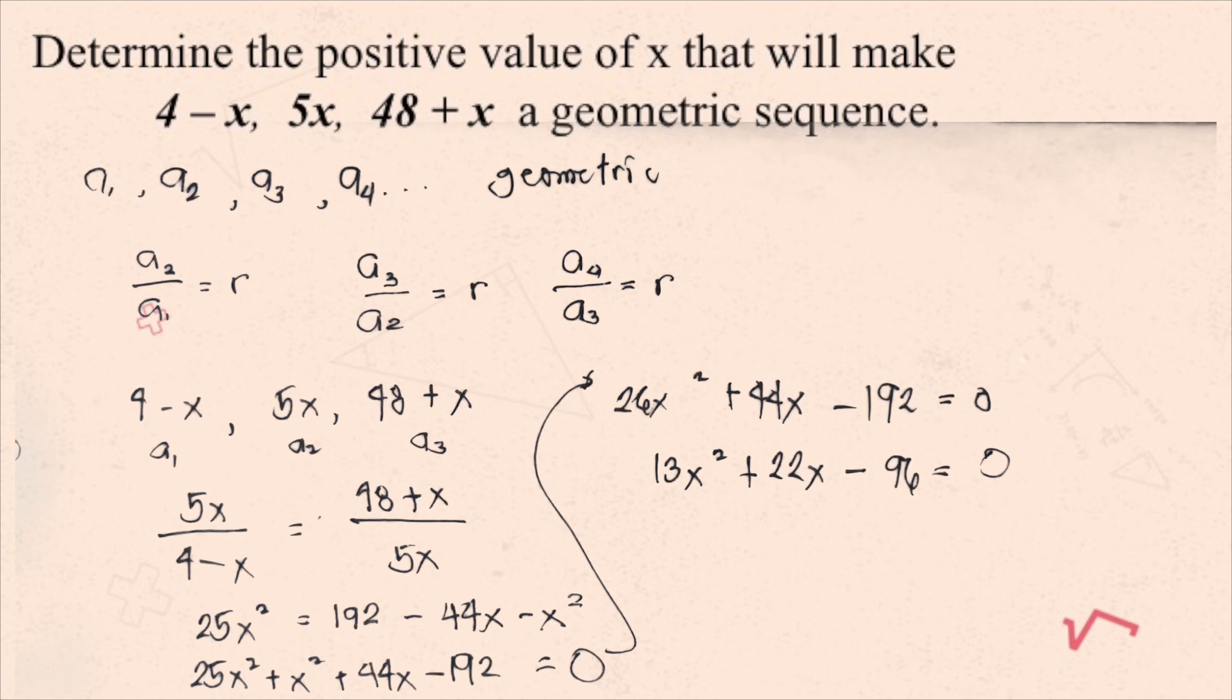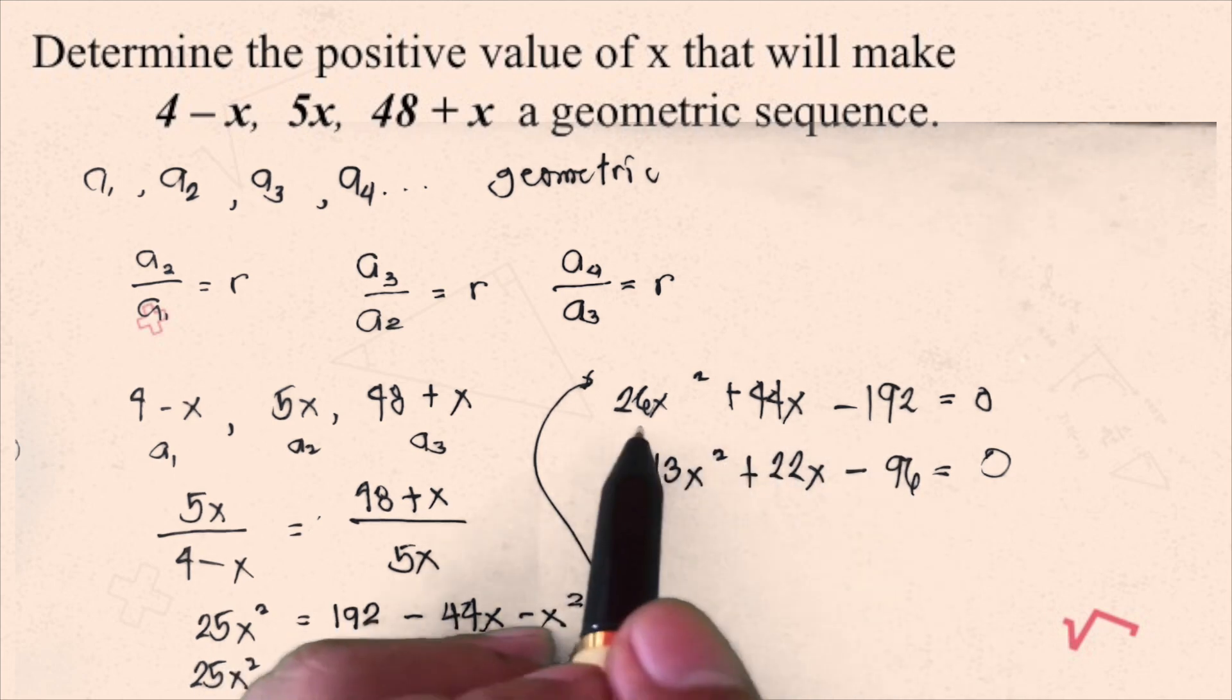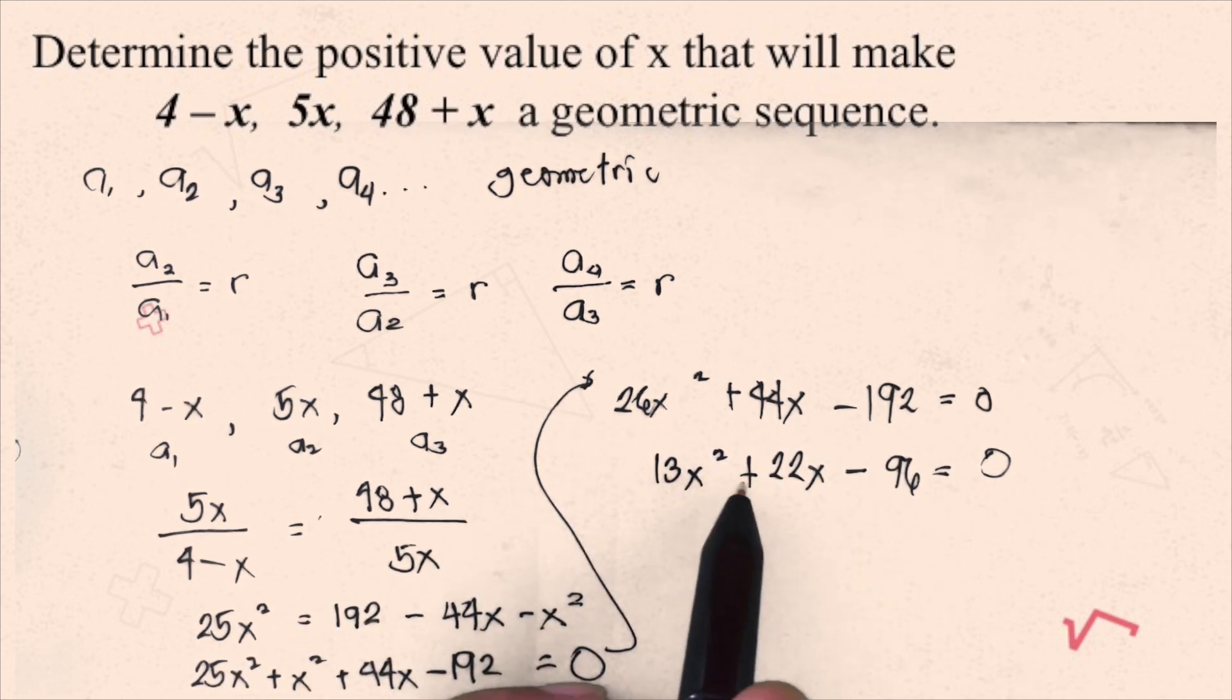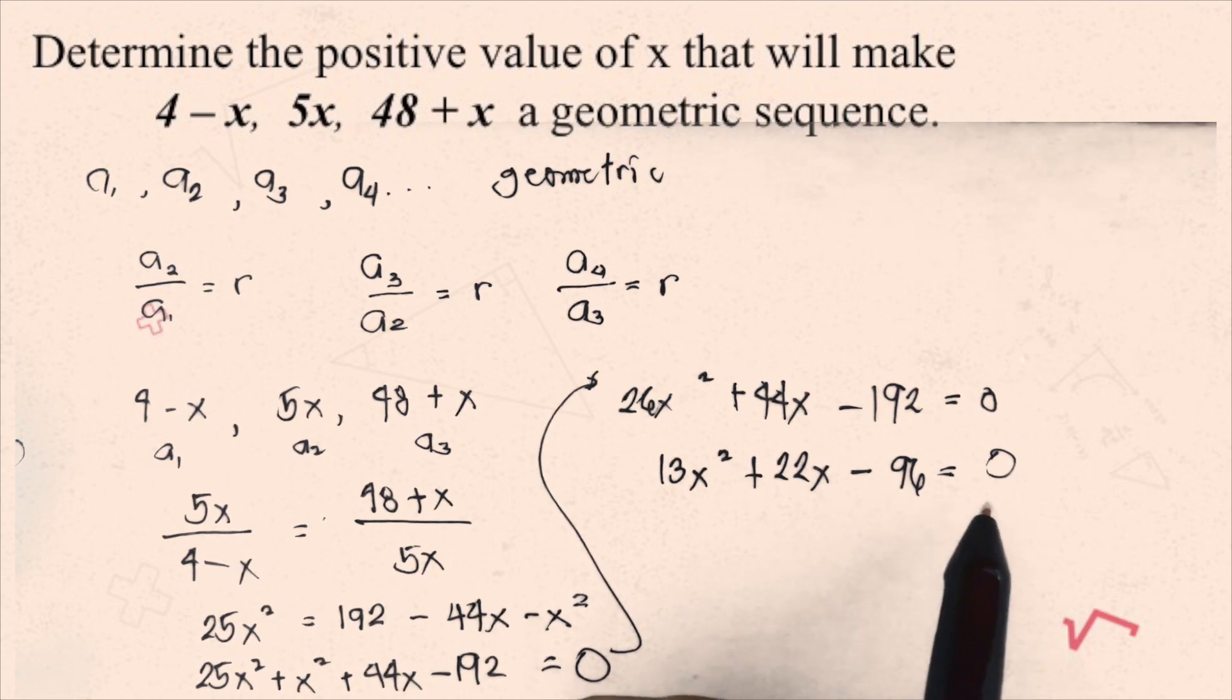Dividing and simplifying by 2, we get 13x squared plus 22x minus 96 equals 0.